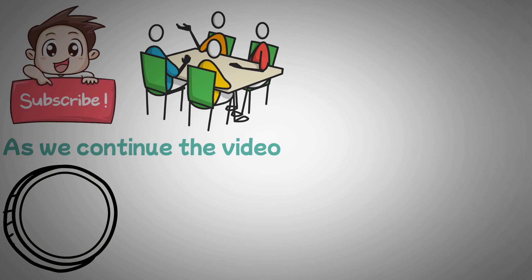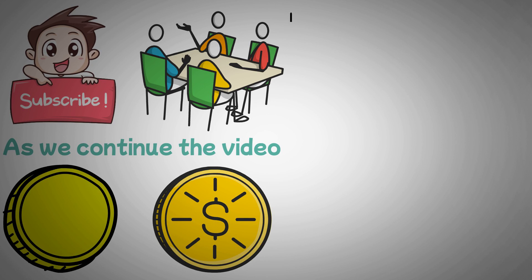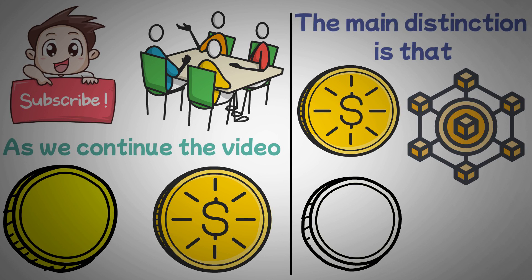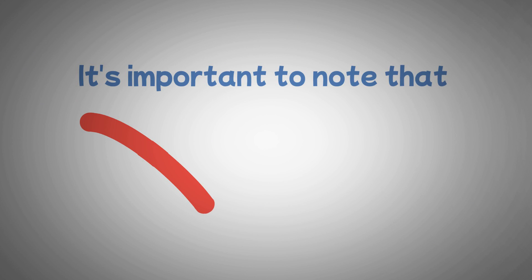What are these two's primary genuine differences now? The main distinction is that whereas tokens utilize the blockchains of current coins, crypto coins have their own blockchains. It's important to note that not all blockchains permit the creation of tokens on them.